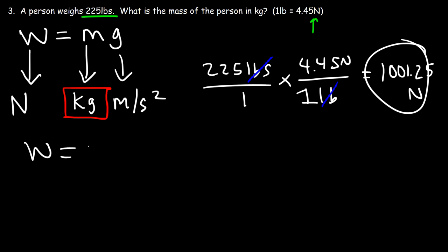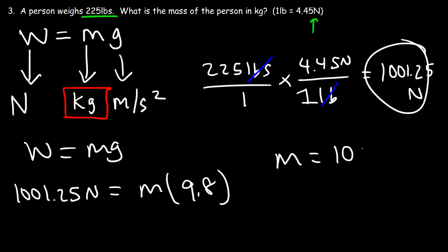So now we can use the formula W equals mg. So the weight force is 1,001.25 Newtons. We're looking for m. And g is 9.8. So the mass is 102.2 kilograms. So that's the answer.